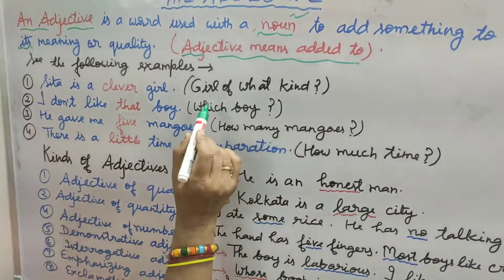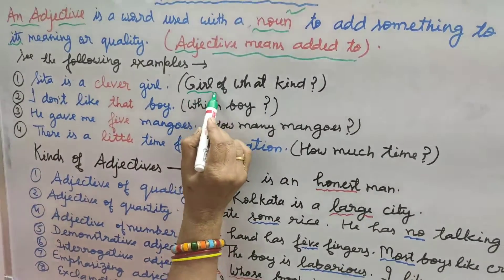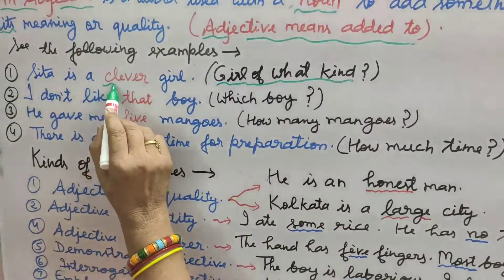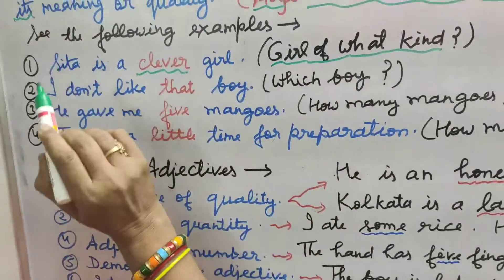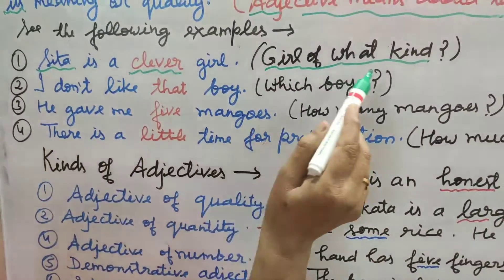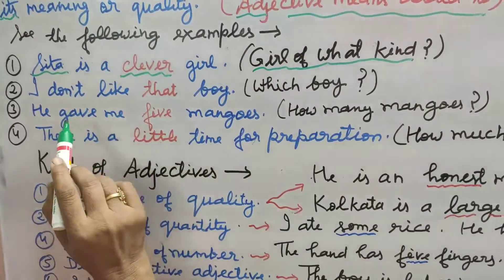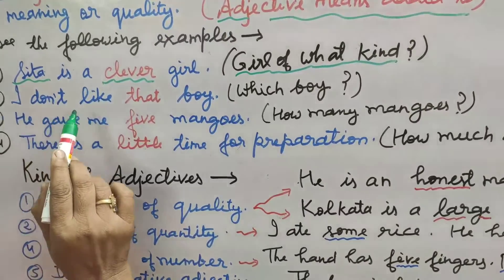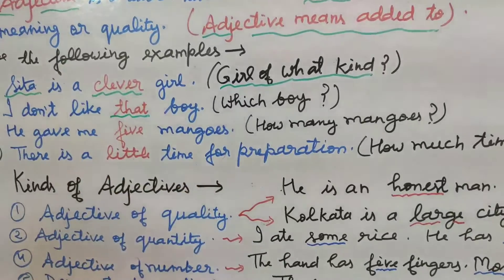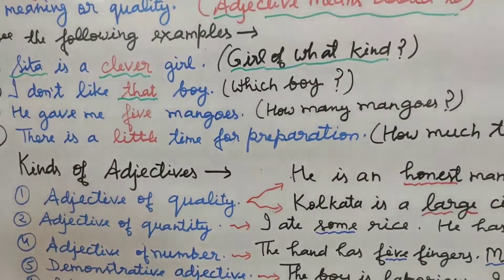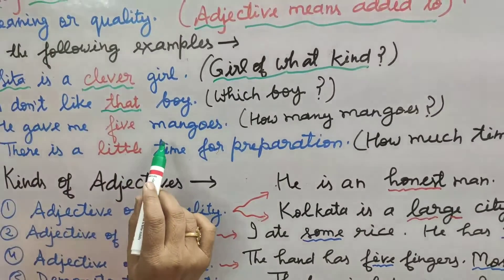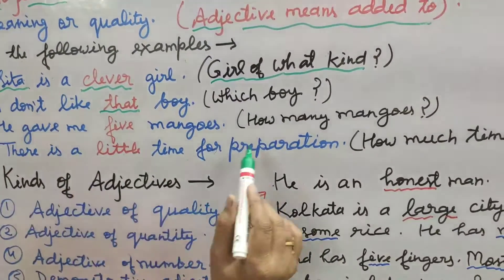See the following examples carefully. 'Sita is a clever girl.' What kind of girl? The question asked is: what kind of girl is Sita? She is a clever girl. Here the quality of Sita is told — which type of girl she is. Second example: 'I don't like that boy.' Which boy? That boy — indicating towards a particular person.